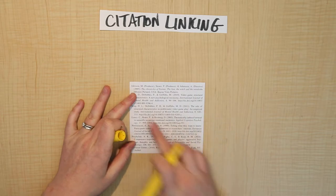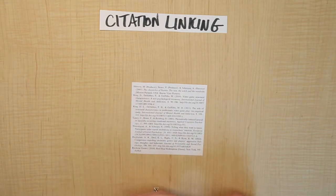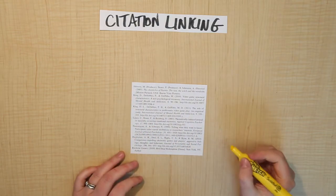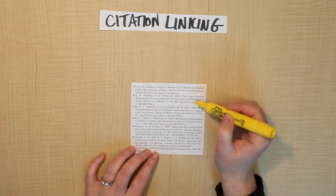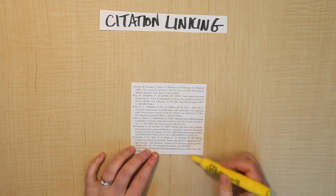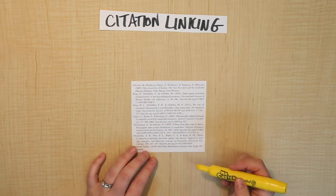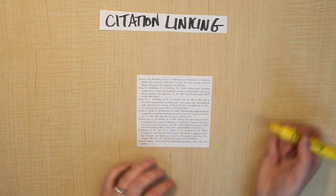So this is a printout of a section of a reference list from one of the journal articles we looked at already. And in order to find out whether you can access these papers or not, you need to understand what the different components are. So we're going to look at a couple of these.